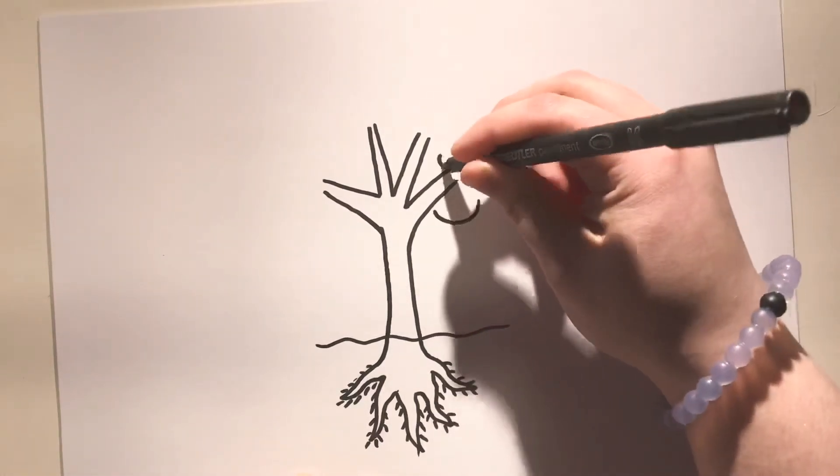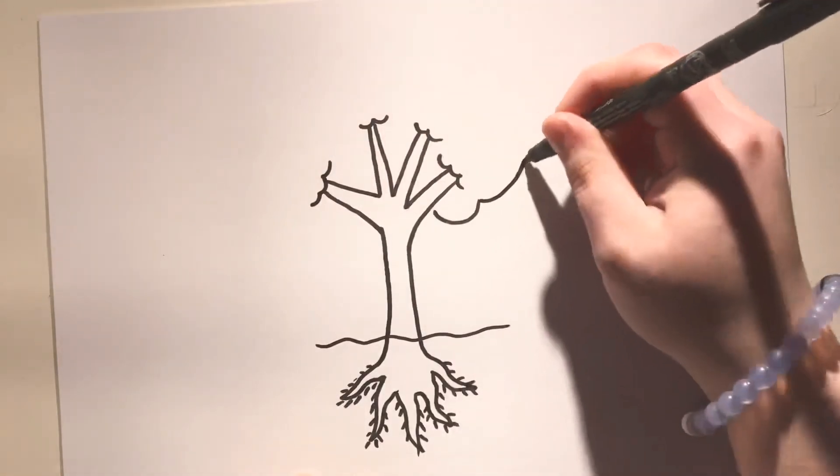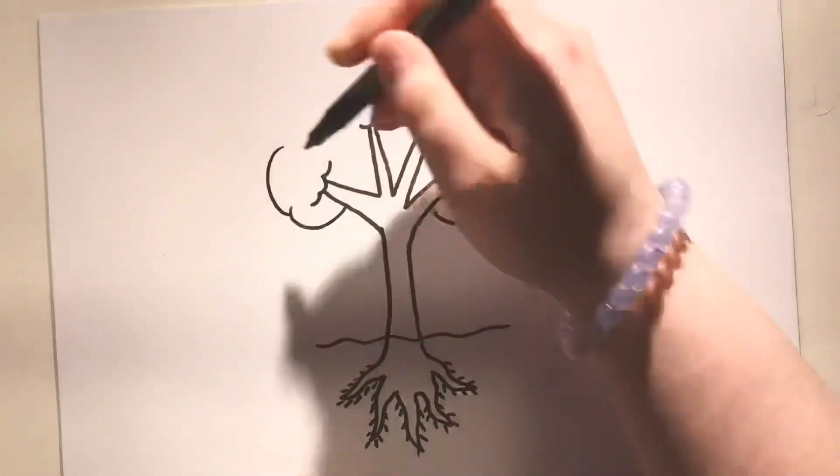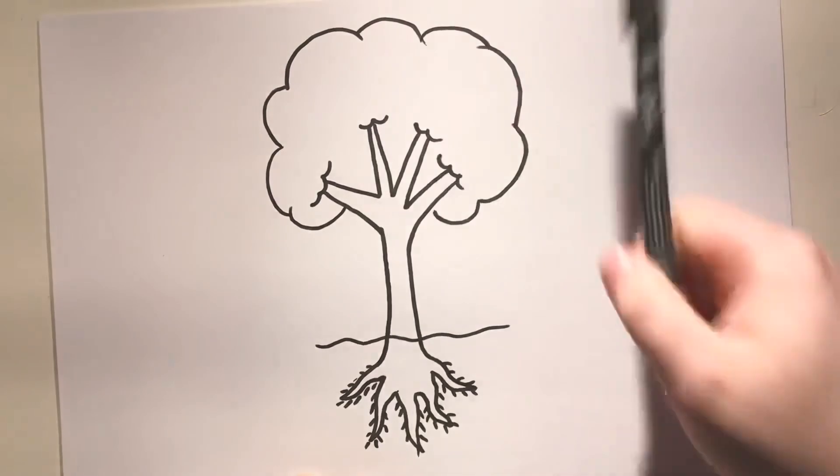And this is where we get to one of the most interesting bits of the tree, which are the leaves. You see, the leaves are one of the things that you can use to identify which tree you're looking at because each tree has a different type of leaf.